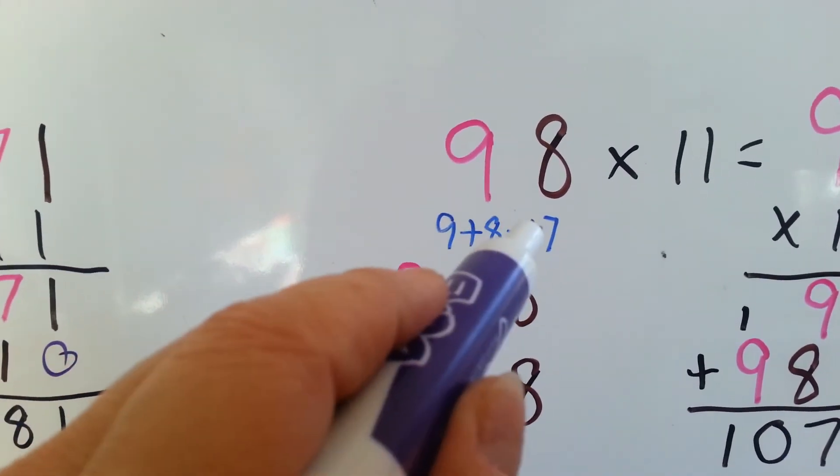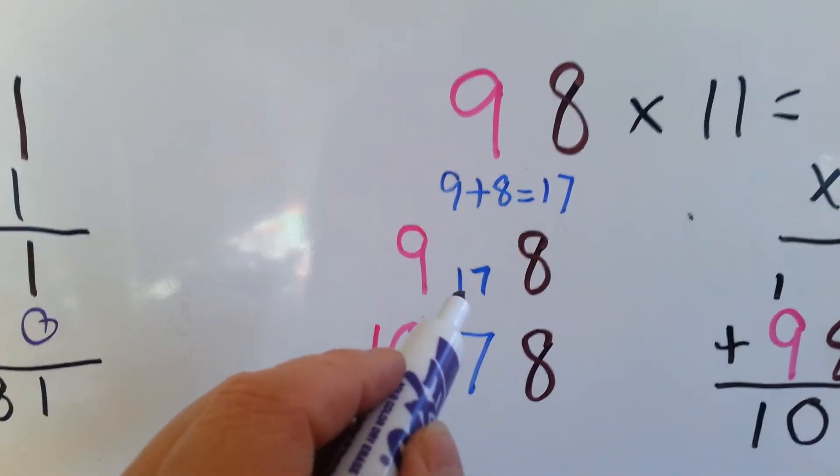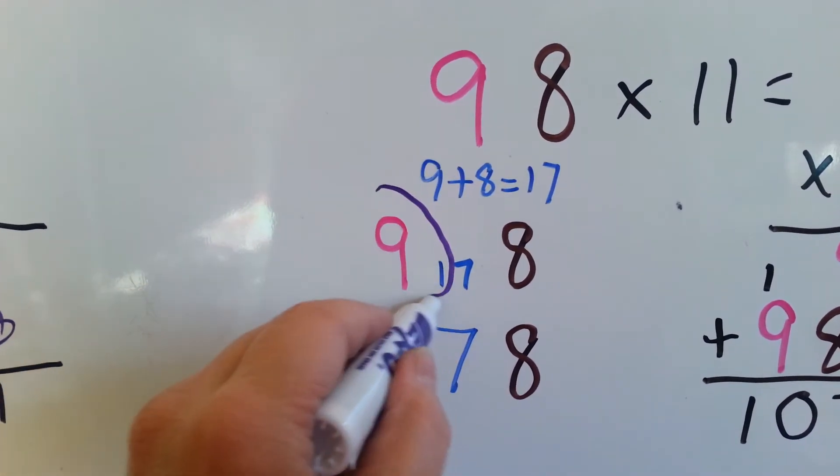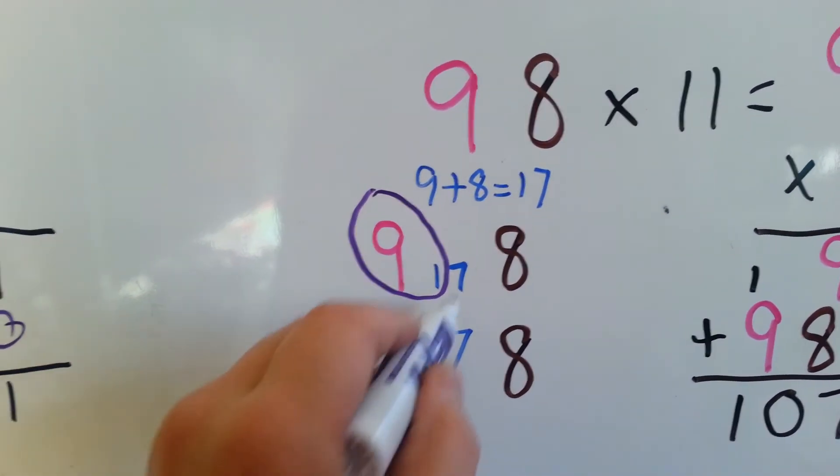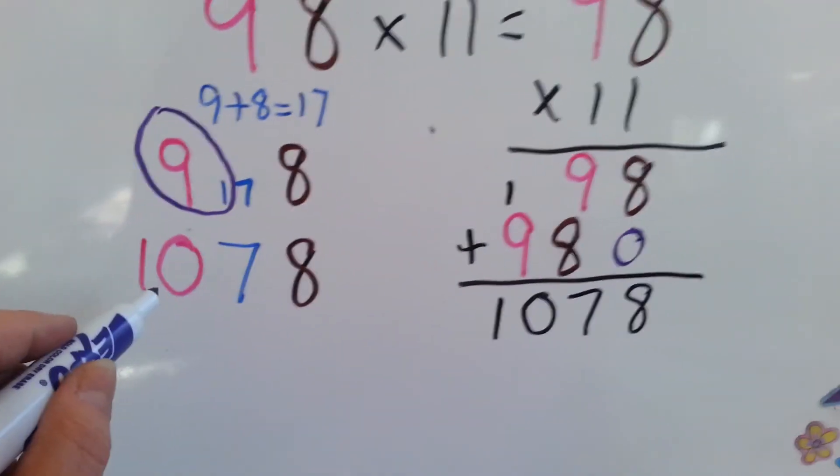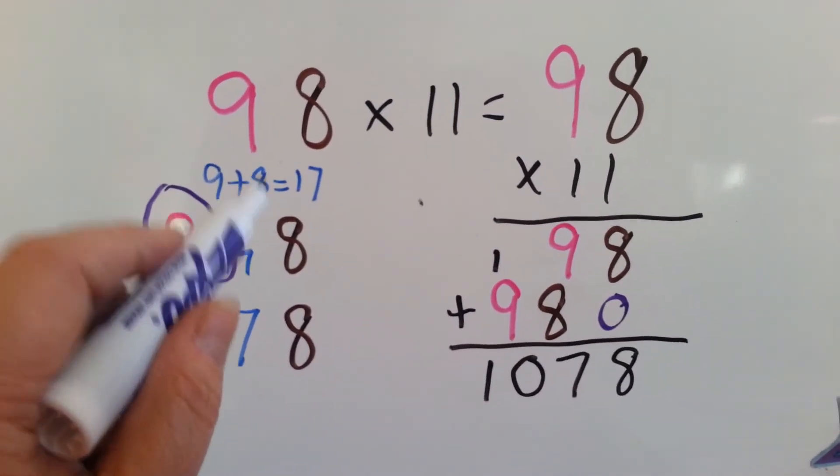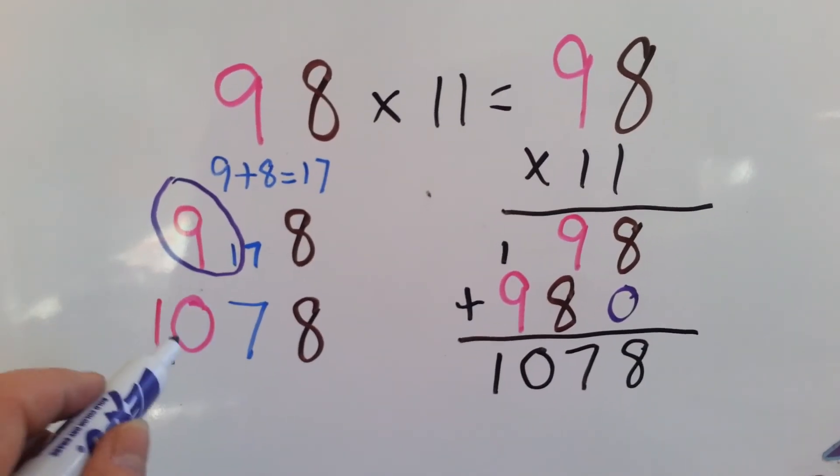9 plus 8 is 17. We've opened up our 9 and our 8. See? We've got our little 17 here. We're going to group the 9 and the 1 together, and then the 7 and the 8 are going to come down. The 9 and the 1 becomes a 10. 1,078. So it works even if this becomes a 10.